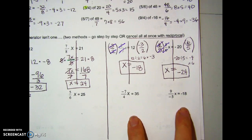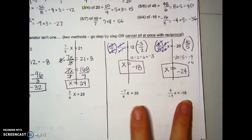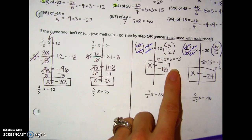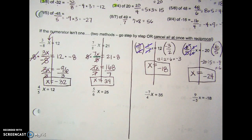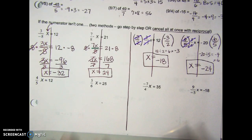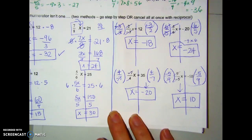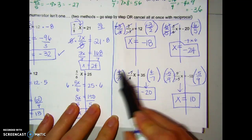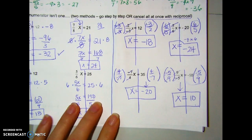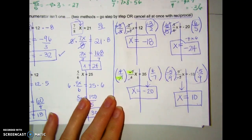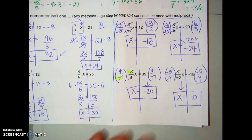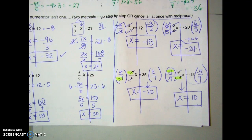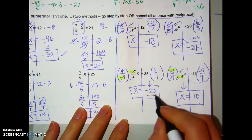This is a shorter method to get x by itself. Try two more problems using this second method. After that, you can pick whichever method you like better. I showed the reciprocal on both sides, then crossed everything out. Remember: if the original fraction has a negative, the reciprocal also needs a negative to cancel it. Pay attention to your negatives, then use the shortcut to work it out.